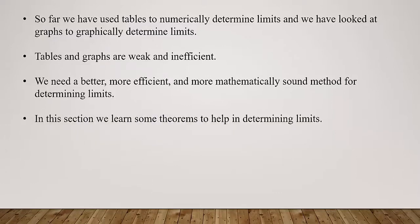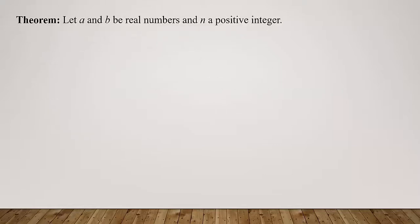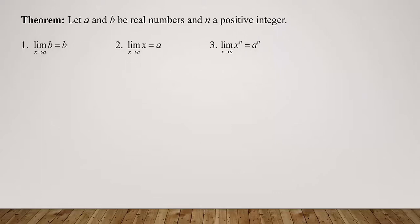In this section we're going to learn some theorems to help us determine limits. Here's our first theorem, where a and b represent real numbers and n is a positive integer. Part one: the limit as x approaches a of b equals b — the limit of a constant is that constant. Part two: the limit as x approaches a of x is just a. Part three: the limit as x approaches a of x to the n equals a to the n.